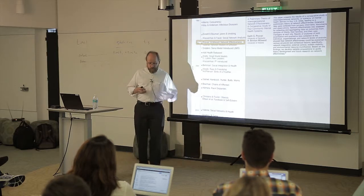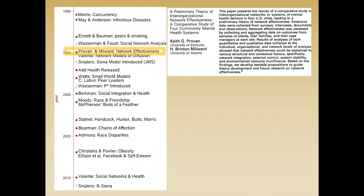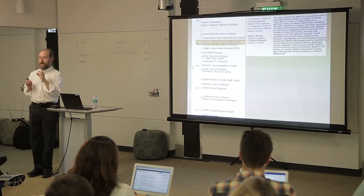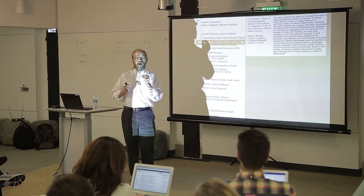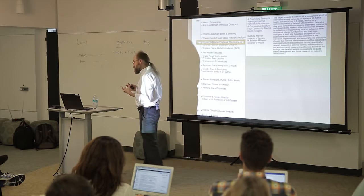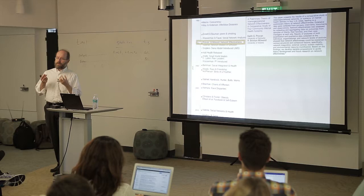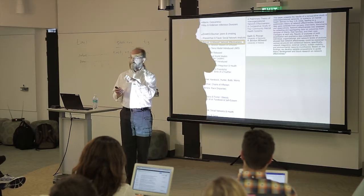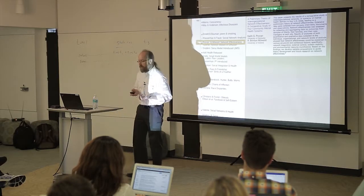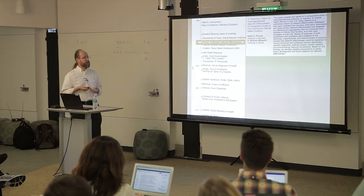Prior to the Provan and Milward piece, most of the work done in social networks and health had been done at the individual level. What Provan and Milward did was open the door to think about inter-organizational networks and health. They did a remarkable study of four or five different counties, looking at health organization relationships among health providers to ask: what is it about the way healthcare providers and organizations interact that makes some counties more healthy than others? It's an 80-page paper — an in-depth, beautiful study asking what social integration and collective efficacy at the organizational level makes some organizational fields more productive for producing health. It has set the tone for organizational studies in health ever since.